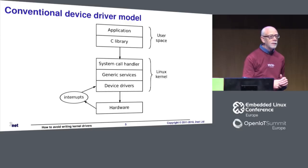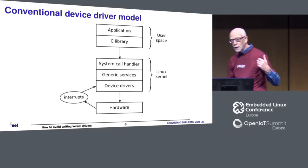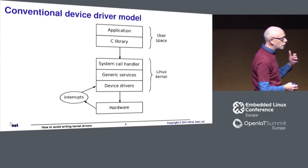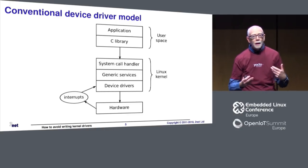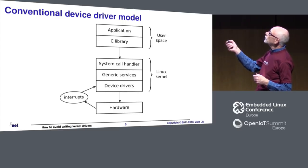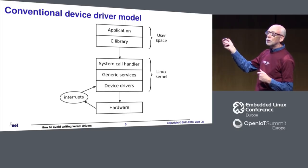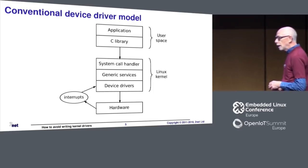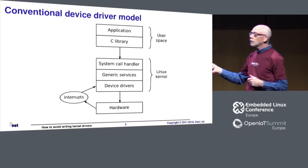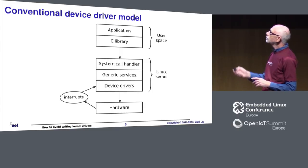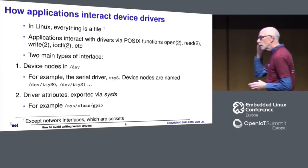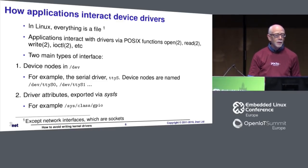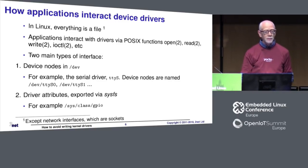The conventional driver model is that all hardware is accessed via the kernel. If you want to access some hardware, you have to write a kernel device driver. That exposes some kind of interface at the user level, and then applications can call the kernel system interfaces. The kernel then accesses the hardware on your behalf. Down in the kernel you can handle things like interrupts, DMA, and other features. In Linux, everything is a file — except network interfaces, which are sockets, but that's almost a file.